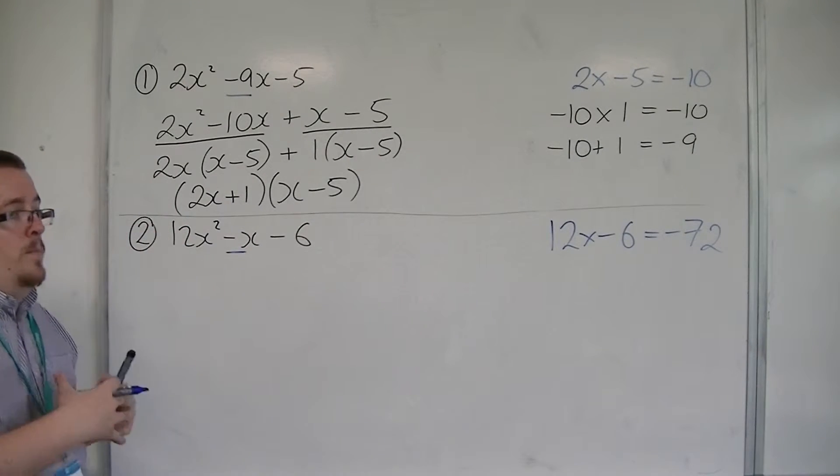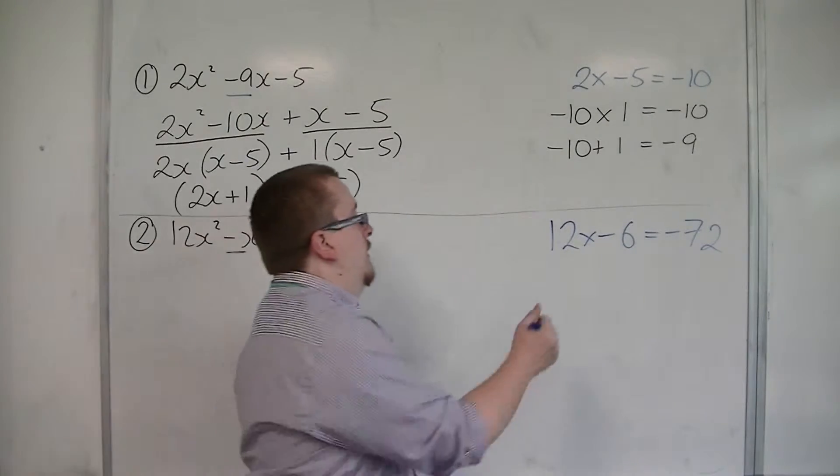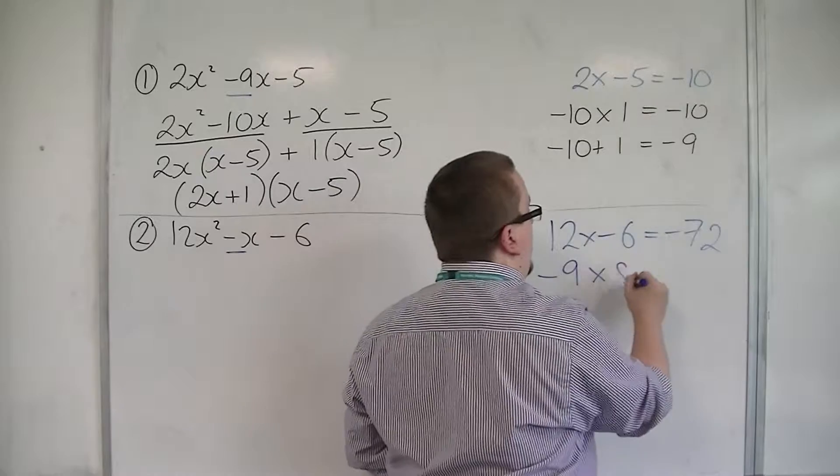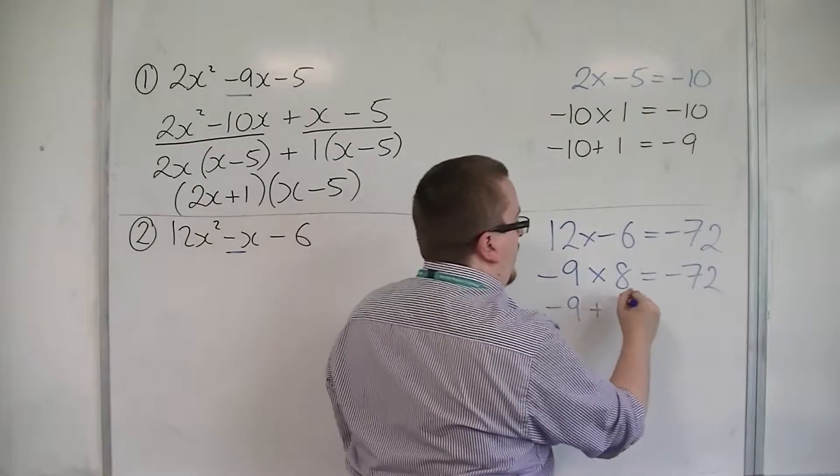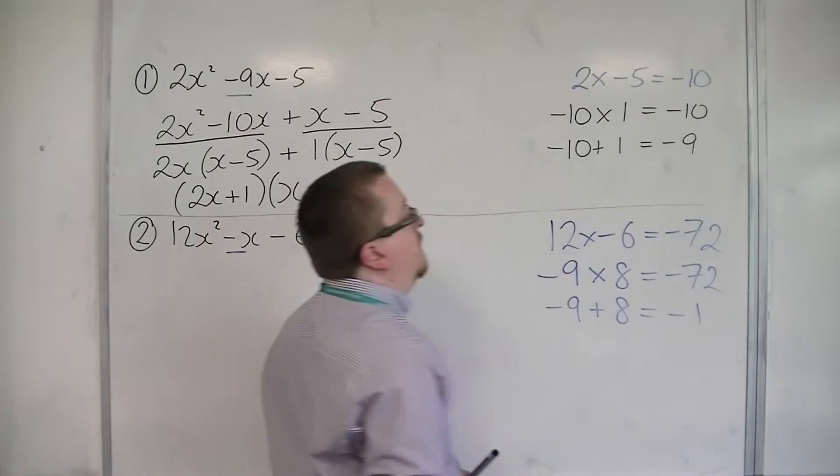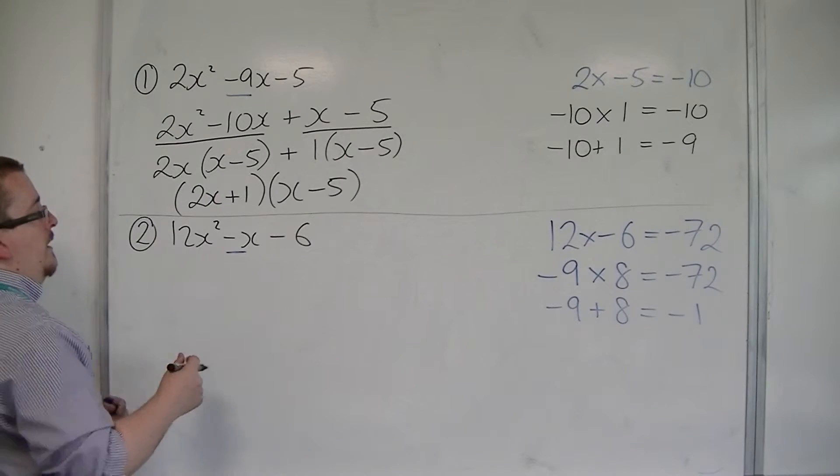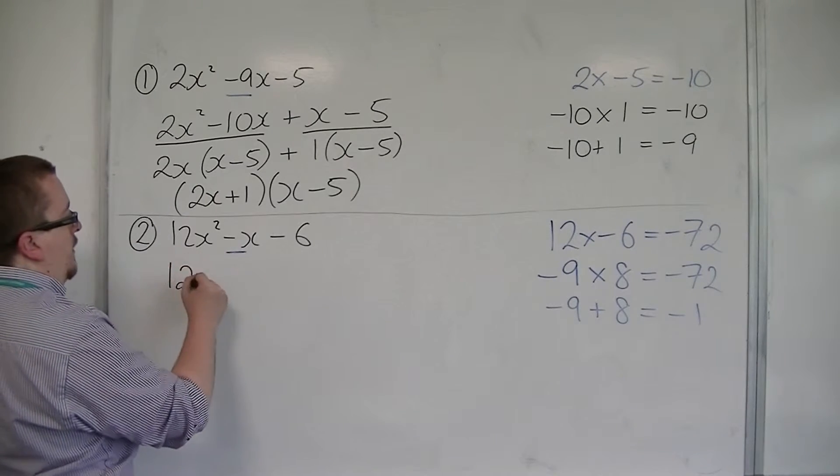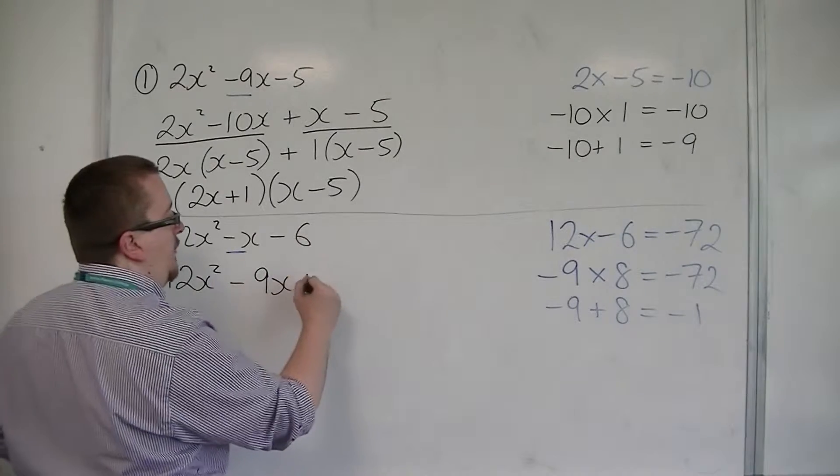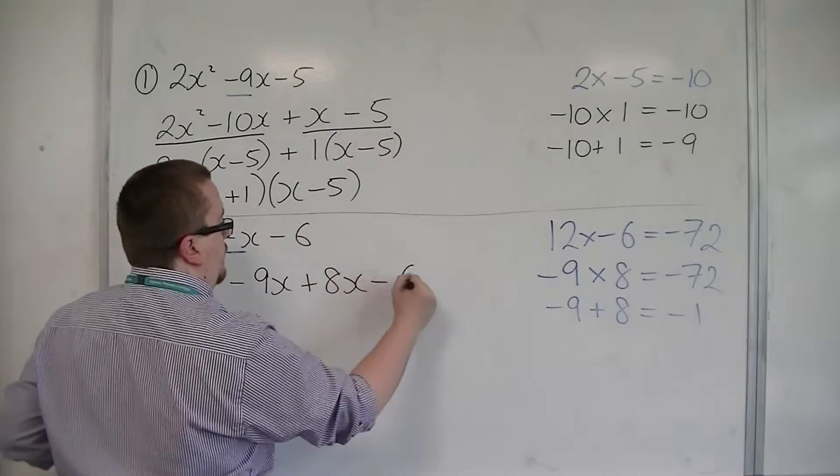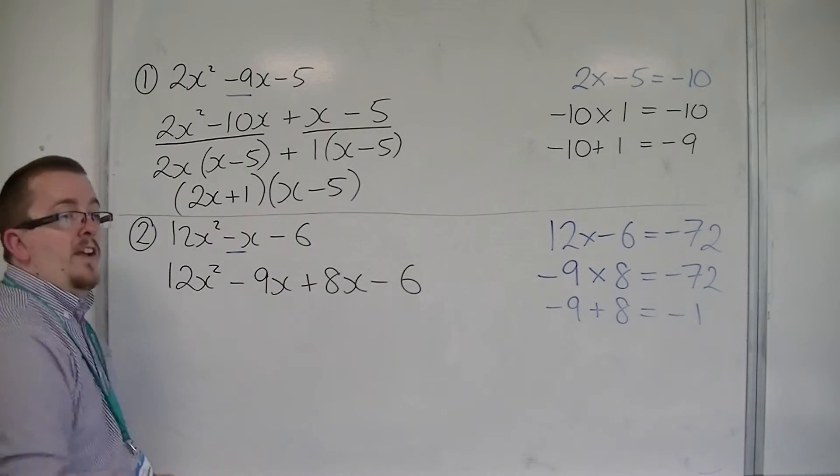So that would be minus 9 and 8. So minus 9 times 8 is minus 72. And minus 9 plus 8 is minus 1. And so that's going to work. So we can split the minus x into minus 9x and 8x. So minus x is now minus 9x plus 8x.